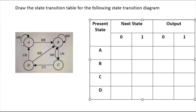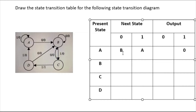Present state 'a': when input is 1, there is no transition, and output is 0 — so put 0. When input is 0, 'a' is going to state 'b' and the output is again 0, so put the value 0.